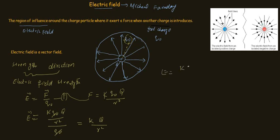So we get E = k·q / r². From this equation we conclude that the electric field strength is directly proportional to the source charge and inversely related to the distance squared between them. Since the source charge is usually constant, E is inversely proportional to r², meaning that as we move the test charge away from the source charge, the electric field intensity decreases.